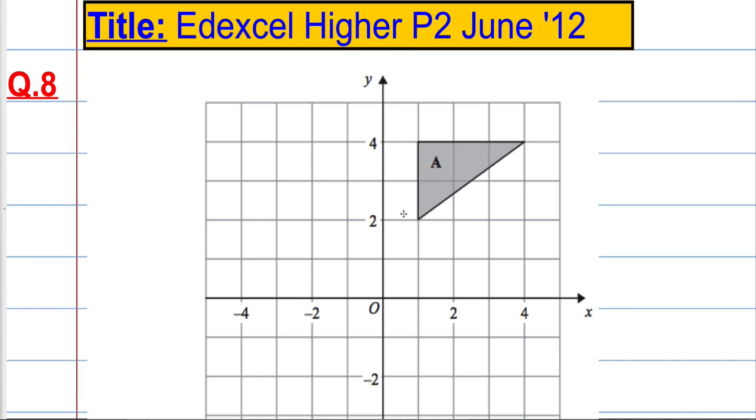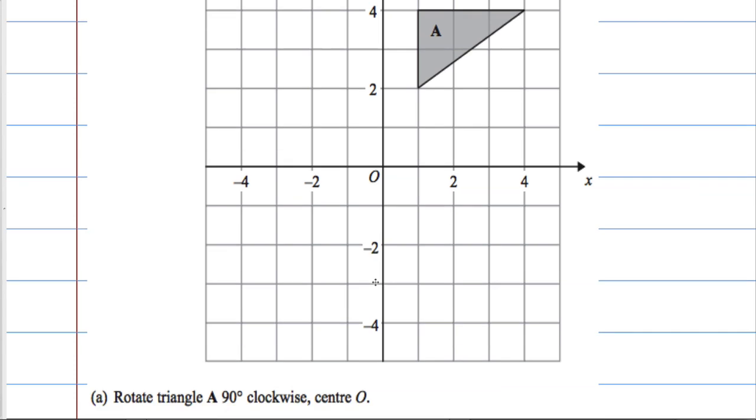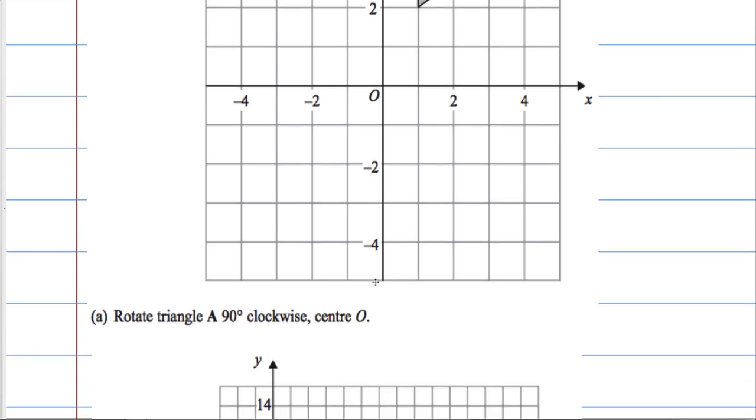In question 8 we've got a grid here with a triangle A on the grid and we're asked to rotate triangle A 90 degrees clockwise with centre O.